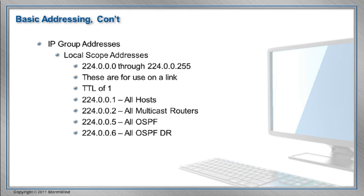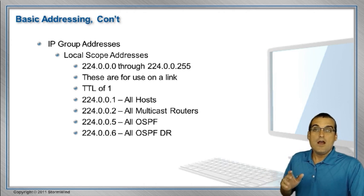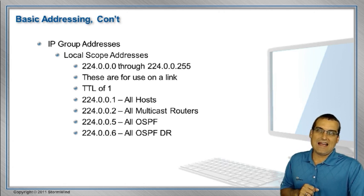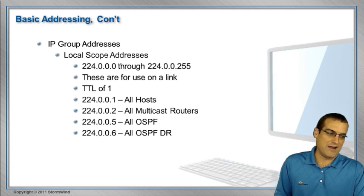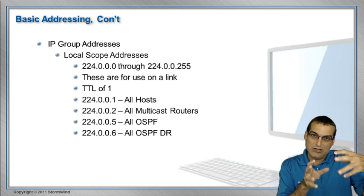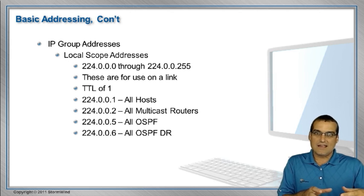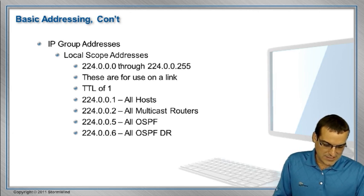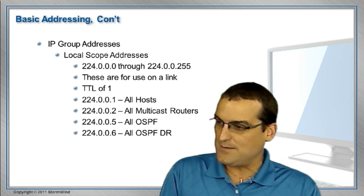There are reserved addresses for special purposes. In the last video, we showed you an example of local scope addressing — we come across these a lot. Local scope multicast addresses are in the range 224.0.0.0 through 224.0.0.255. They're used for multicasting on just a local link — maybe five or six people on a broadcast link, or just two devices on a point-to-point link. These multicast addresses are only useful on that link and have a TTL of one to ensure they can't be forwarded beyond the link.